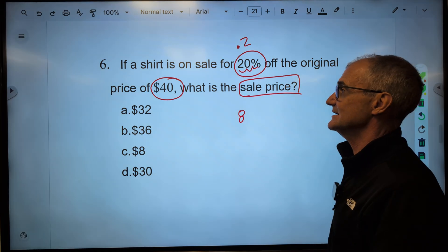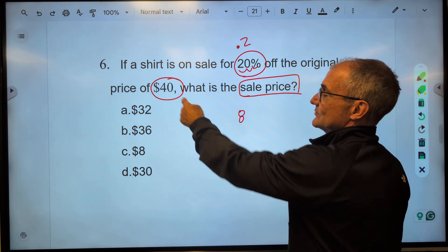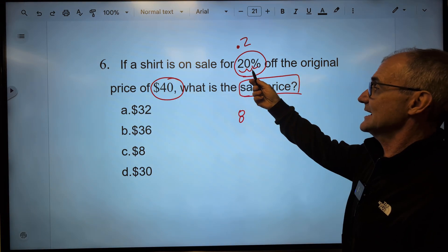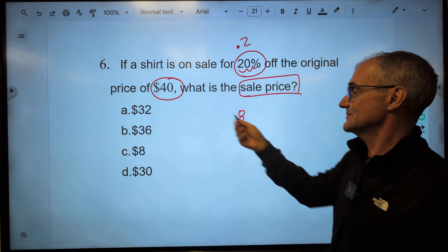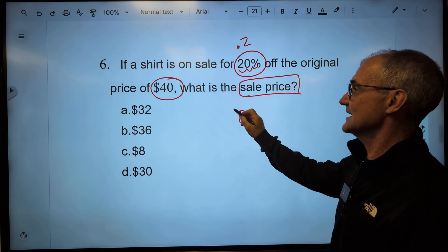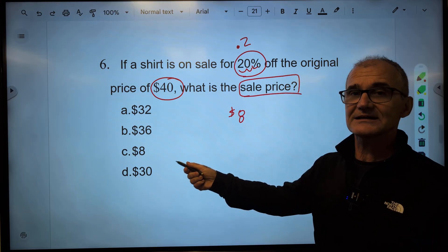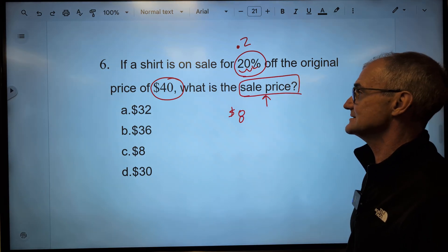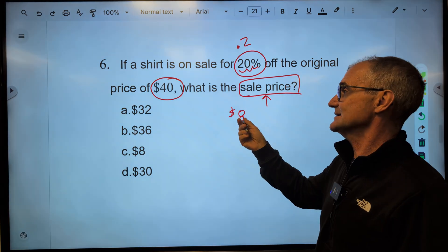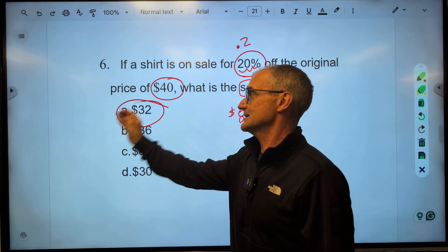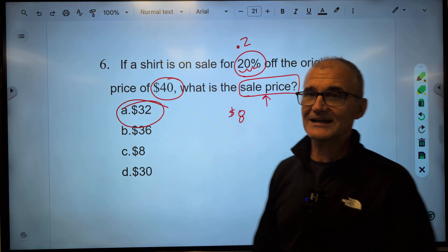0.2 times 40 is 8. 2 times 4 is 8. Or 0.2 times 4 is 0.8. And then add that 0 on there to get 8. It is $8 off. That's usually going to be one of your answers. It is an incorrect answer because it's asking for the sale price. 40 minus the 8 gives you a sale price of 32. Correct answer, answer A.